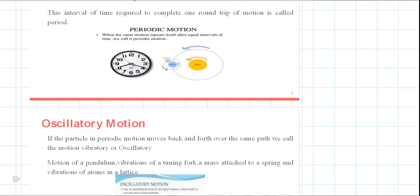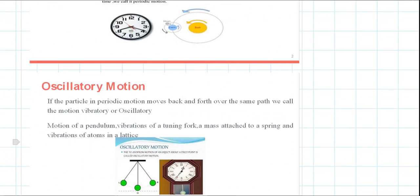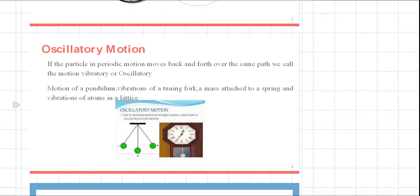This is an oscillatory motion, which is also a periodic motion. In periodic motion, if a particle moves back and forth over the same path, we call that motion vibratory or oscillatory. This is where the bob moves back and forth. In regular intervals, the movement is repeated. This is the equilibrium position, and this is the periodic motion because the motion is repeating at regular intervals of time.